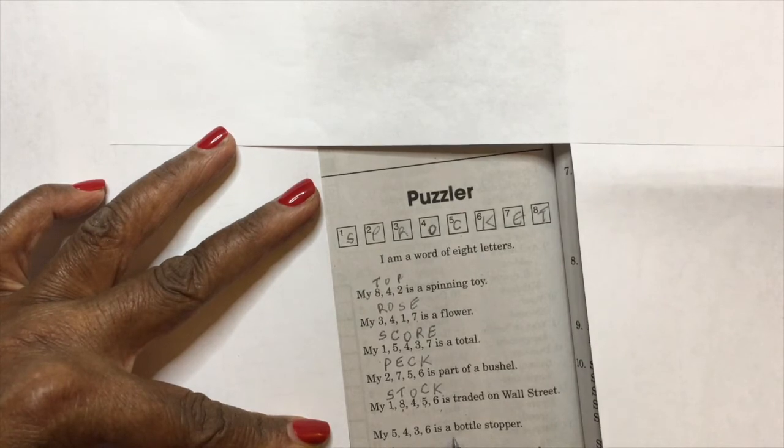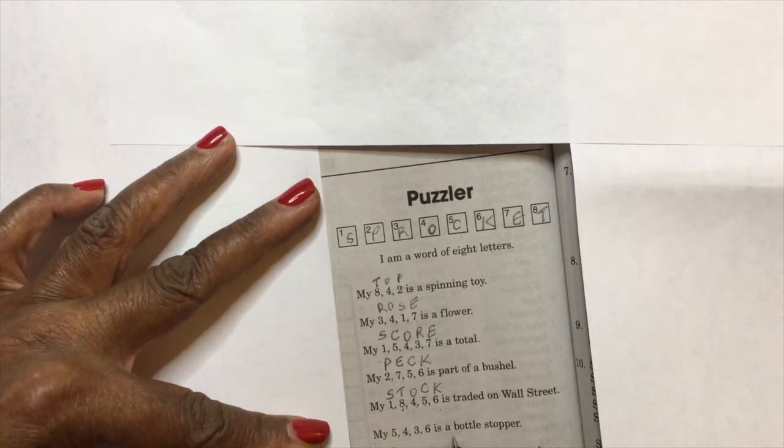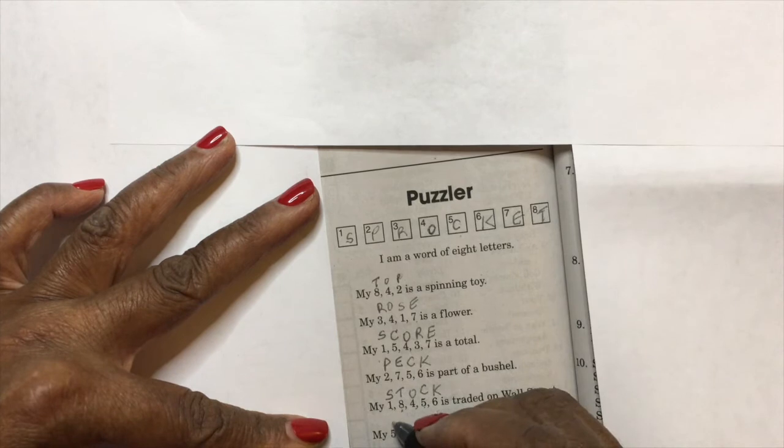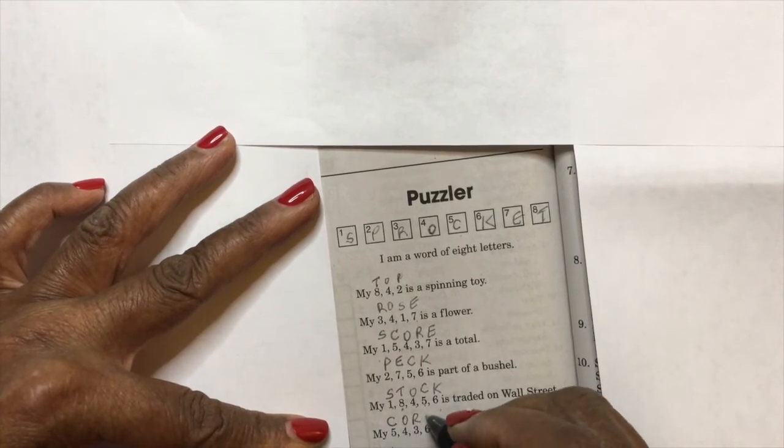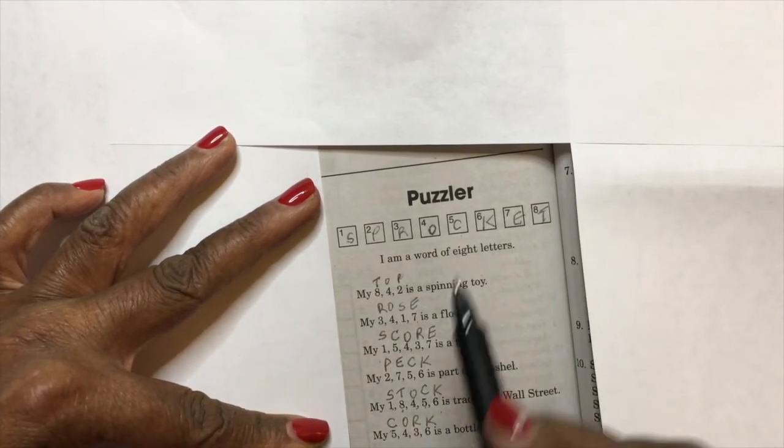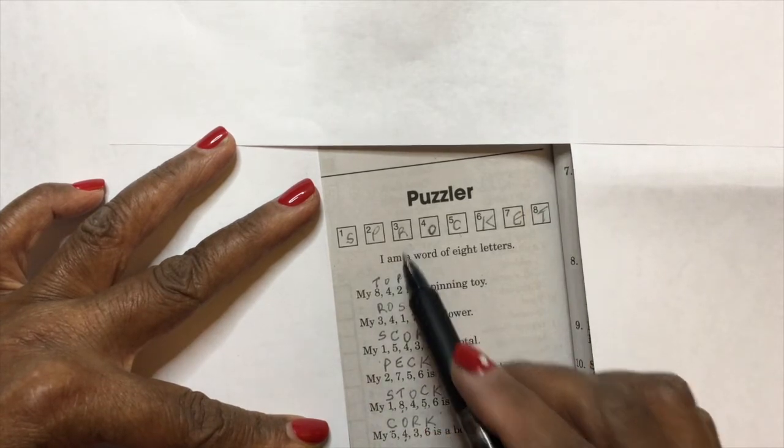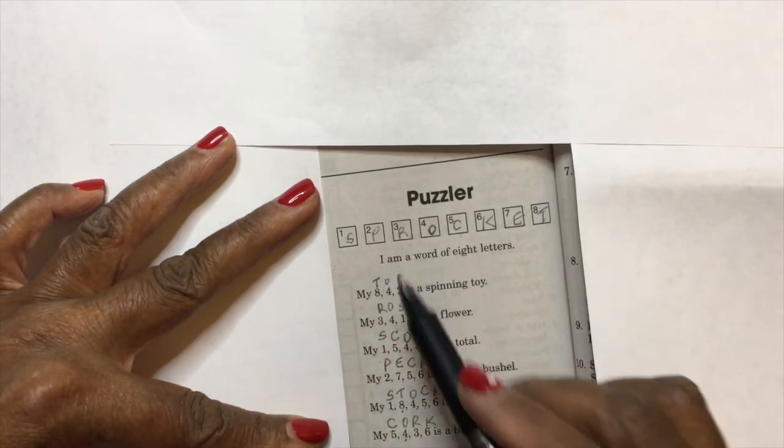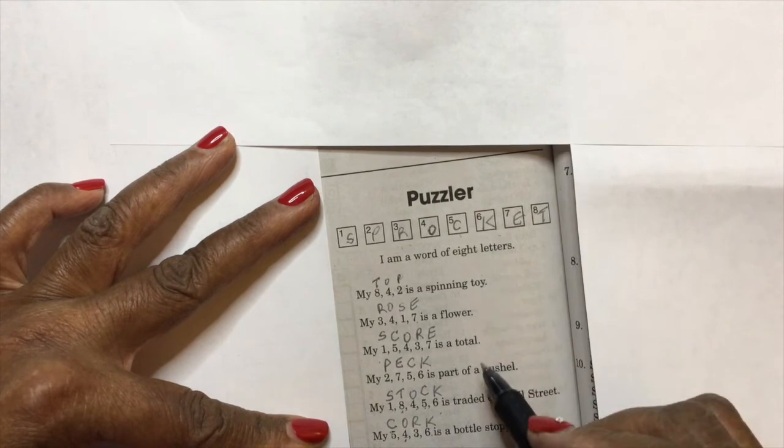four, three, six is a bottle stopper.' Hmm, oh, I would say that's a 'cork.' Okay, let's check: my five is a C, four is an O, three is an R, six is a K. I think we've got that